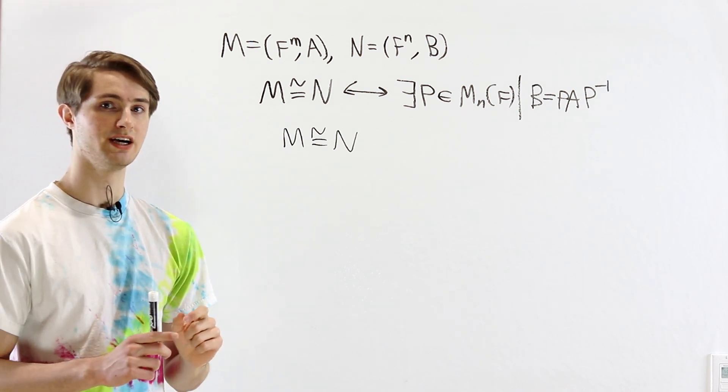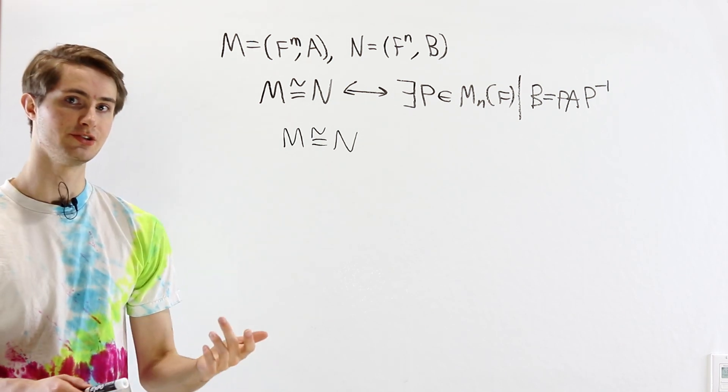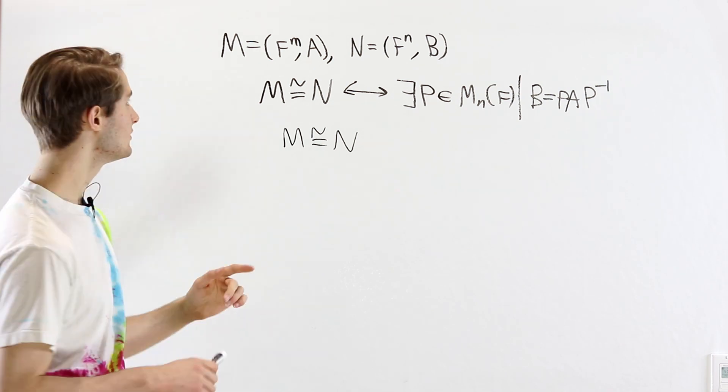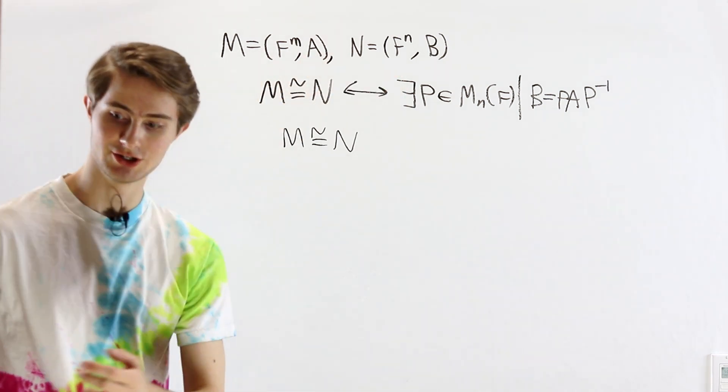So if these two are isomorphic as F[x]-modules, they also have to be isomorphic as F modules. And we know that two vector spaces are isomorphic only if they have the same dimension.